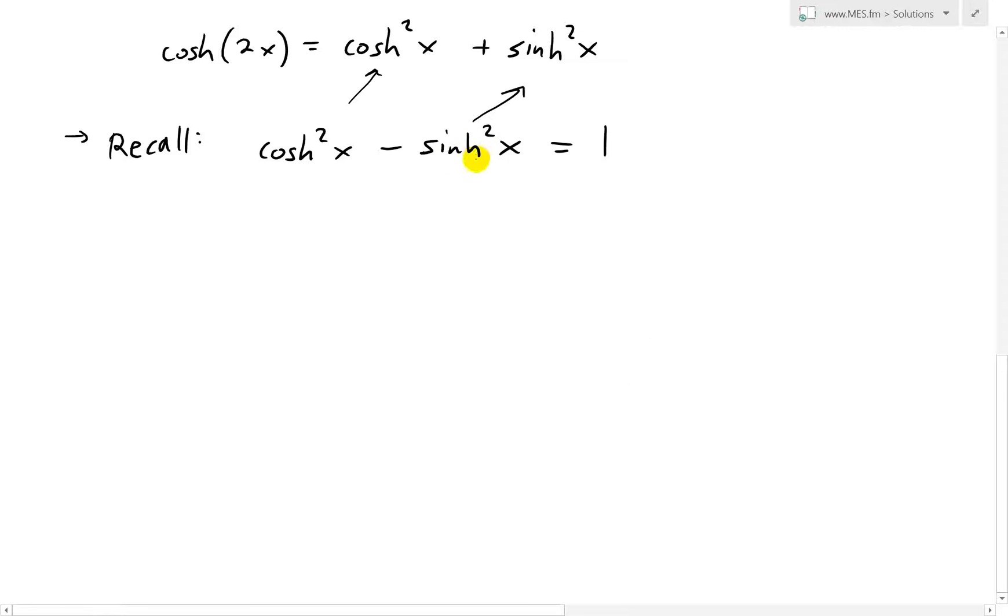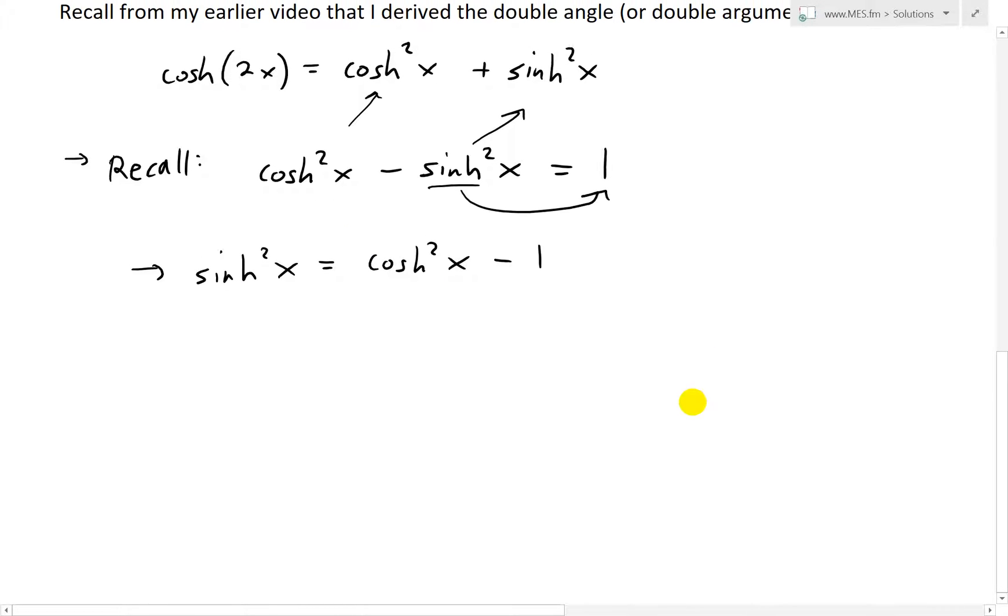I'll throw in the sinh one in first. So what we'll do is if we rewrite this, if we just move this over here, move the one on this side, what we end up getting is sinh²x equals to, well that's just going to be cosh²x minus 1. So we have this one like that.